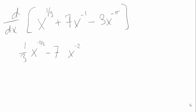Finally, for this minus 3x to the minus pi, I bring down the minus pi. Minus 3 times minus pi is plus 3 pi, and my power, I just subtract by 1. So my power is minus pi minus 1.